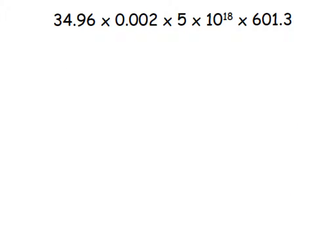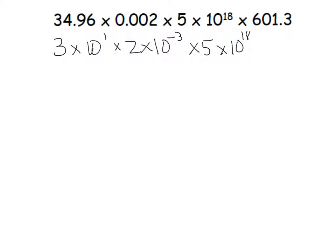Here's another problem with leading digit approximation. 34.96 is approximately 35, but strictly speaking we round it to about 30, so 3 times 10 to the first. 0.002 is 2 times 10 to the negative third — be careful not to round that to 0. It is 2 as the leading digit, times 10 to the negative third. This practice of writing in scientific notation is useful for keeping track of the size of numbers. The 5 stays as 5, we have 10 to the 18th, and 601.3 is approximately 6 times 10 squared.